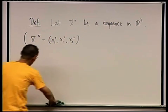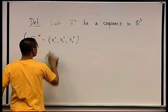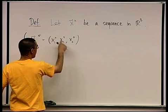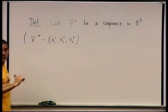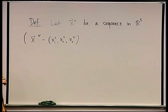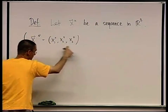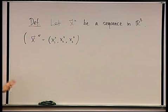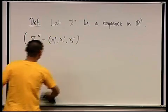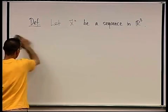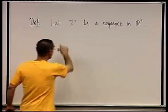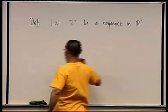If you prefer, you can write it as x5, y5, z5. That's just as appropriate. So each element of the sequence is itself a vector now. Let xn be a sequence in R3.